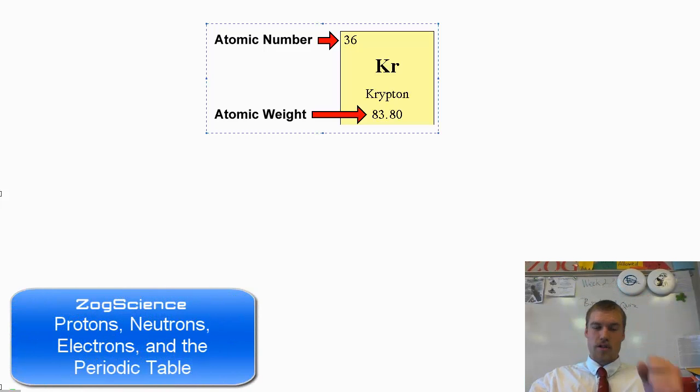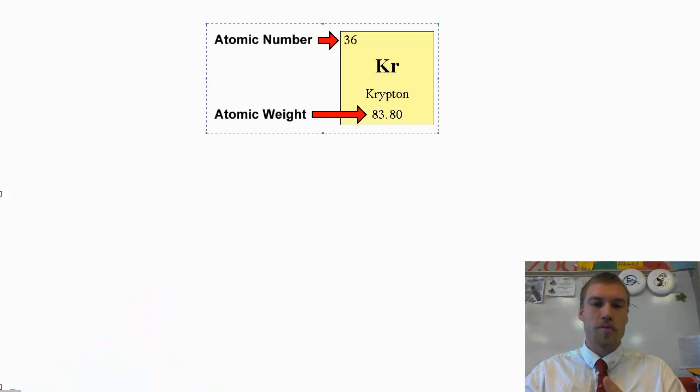Hello and welcome to another edition of Zogg Science. Today we're going to be talking about how to interpret a periodic table and also calculate the number of protons, neutrons, and electrons.